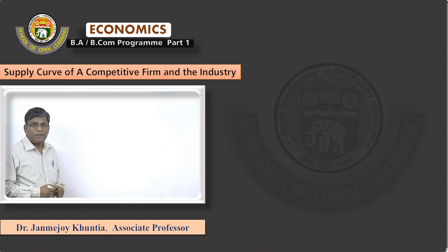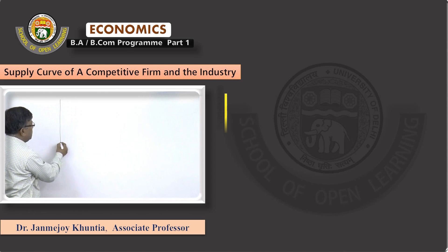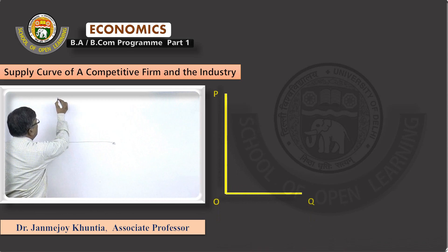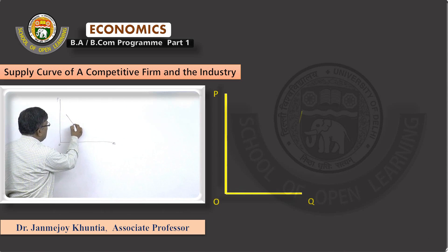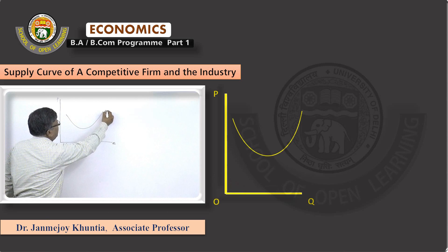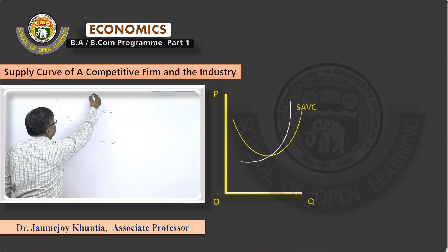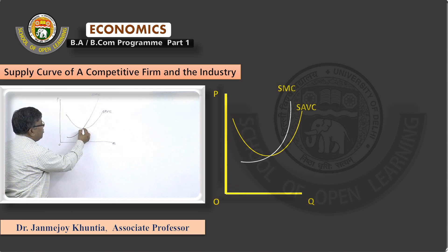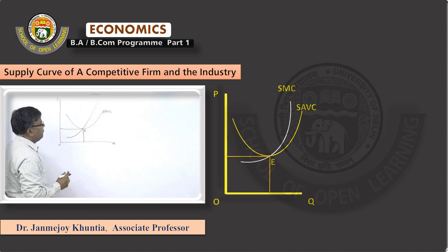The supply curve of a competitive firm and the industry can be derived this way. Start with the shutdown point of a firm. This is the short-run average variable cost, written as SAVC. This is the short-run marginal cost. The firm cannot supply output below this point.